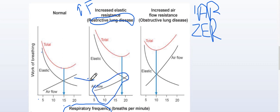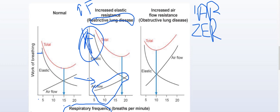The major change you can see is in the elastic resistance. In restrictive lung diseases, there is comparatively increased elastic resistance. The elastic resistance increases significantly, and to overcome this increased elastic resistance the body must respond.